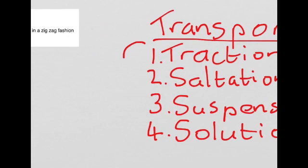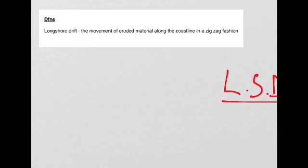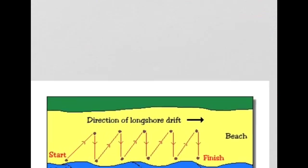All four of these processes occur in another process called longshore drift. Longshore drift is the movement of material along the coastline in a zigzag fashion. This movement can happen in any of the four methods of transportation we just talked about. So the heaviest material will be moved by traction along the coastline in a zigzag fashion, and so on.